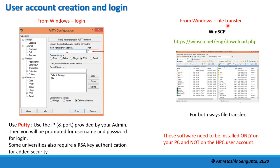For Windows file transfer back and forth from your local system to the master node, download the free software WinSCP. It has a nice interface where you can drag and drop files, and it will securely copy files between your HPC user account and your local system. It is important to understand that software like PuTTY or WinSCP only needs to be on your personal computer — not on the HPC user account.